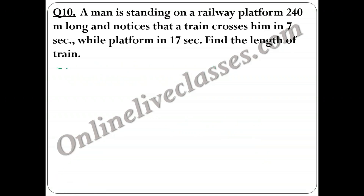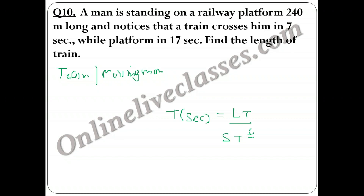Case 4 — Train crossing a Moving Person: Time (seconds) = Length of Train / [(Speed of Train ± Speed of Person) × 5/18]. Use '+' for opposite directions and '−' for same direction. The person's length is negligible. This formula applies when both the train and the person are moving.